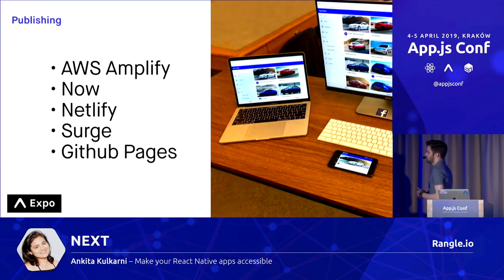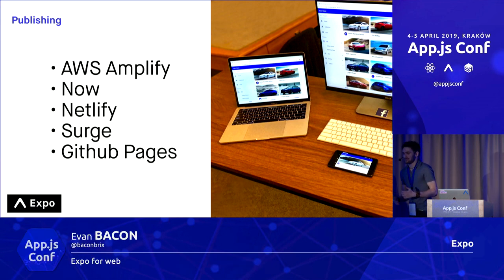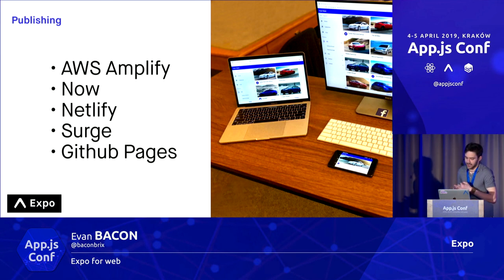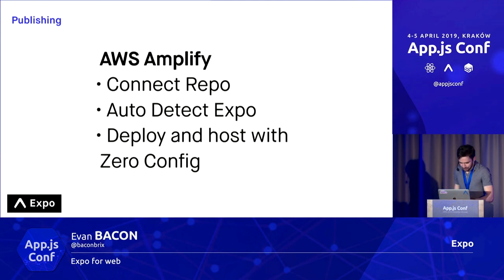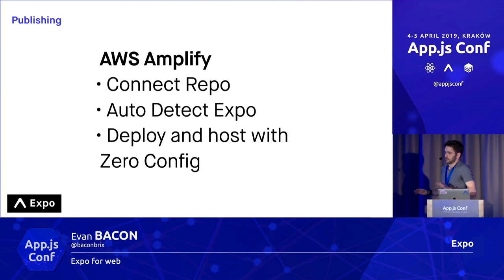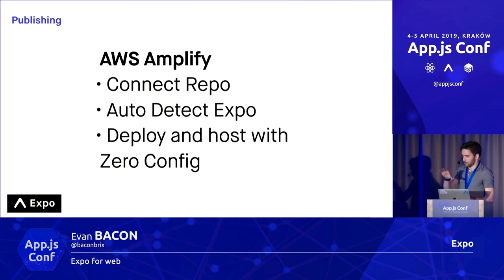Publishing is also really important. If you've used Expo, you know that publishing is made easier by Expo. With web, we wanted to do the same thing. On that web examples repo, I have examples of how to upload using Amplify, Netlify, and GitHub Pages. The Amplify one in particular is really nice — as soon as we put it out, the Amplify team added integration directly, so if you connect your repo to Amplify, it will automatically detect that it's using Expo and deploy and host your project with zero configuration. Making a project and putting it on the internet for people to use is ridiculously easy.